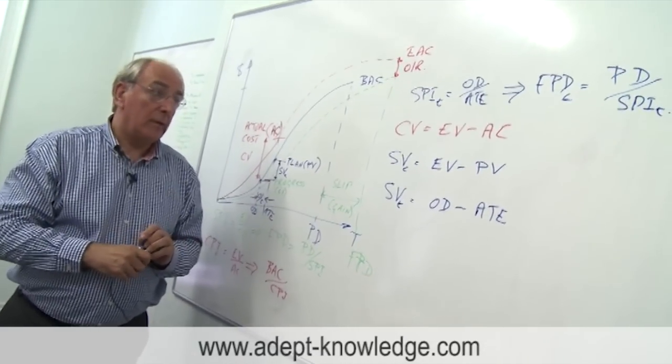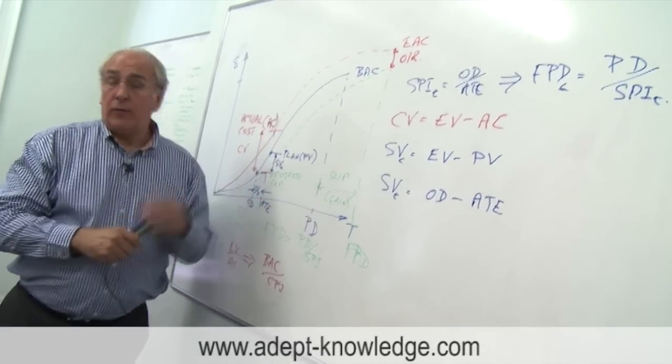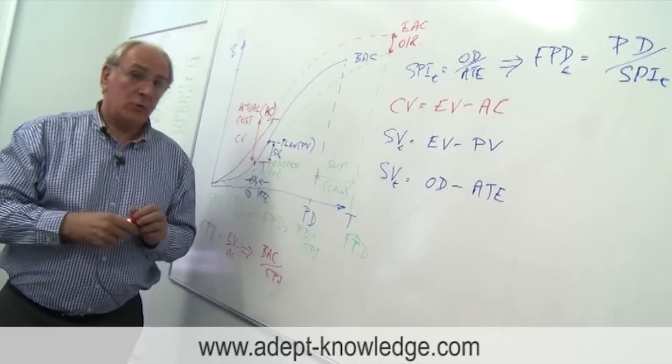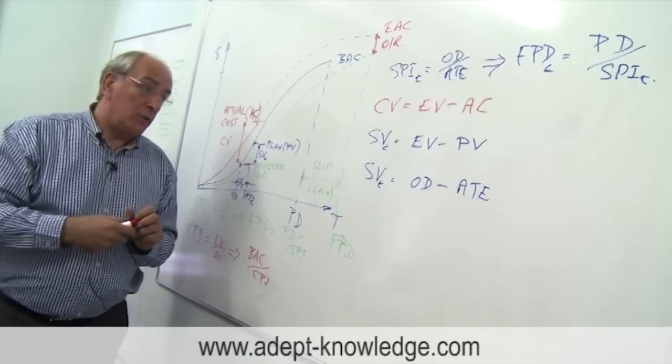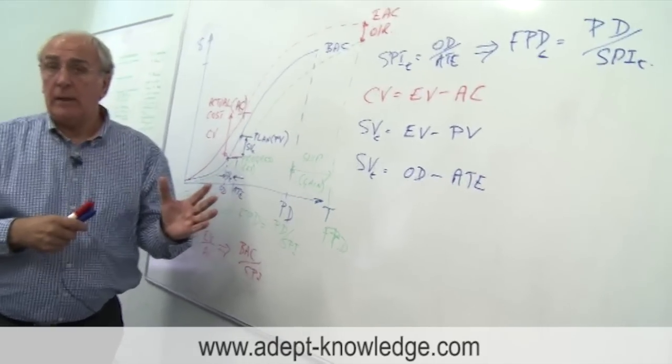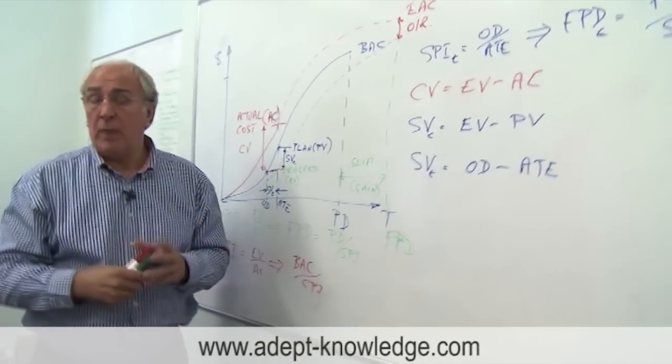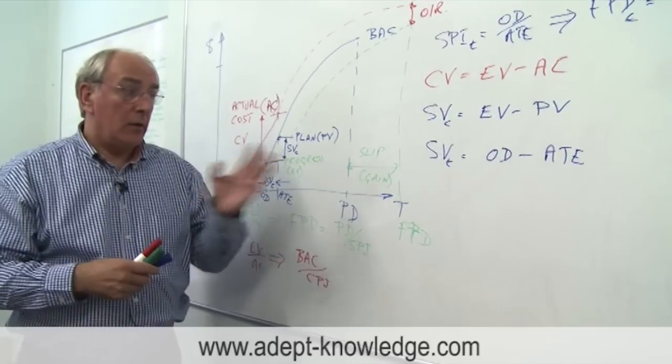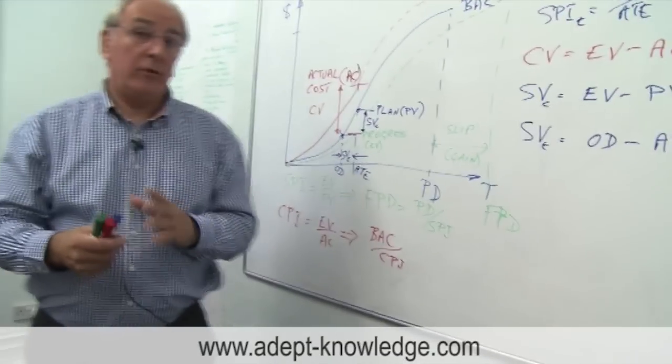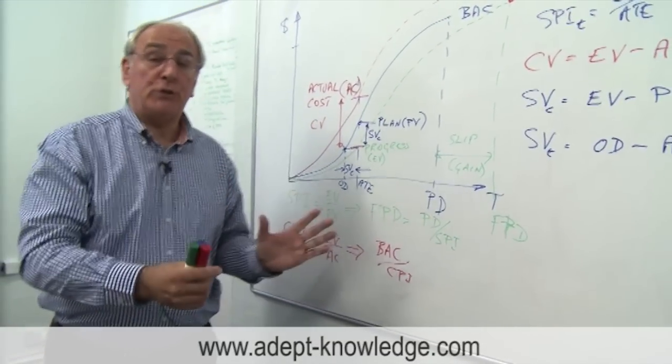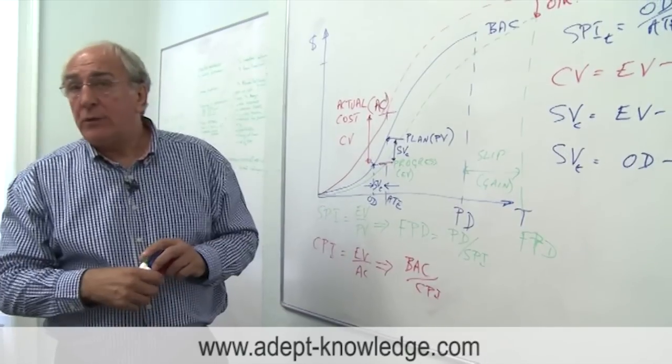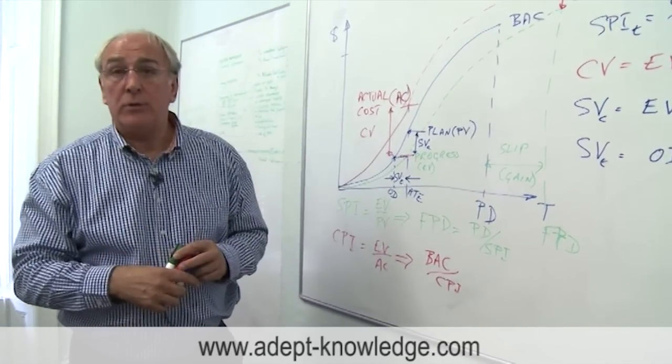The third pieces of intelligence that come out of this are the variances. If you recall, the cost variance was the difference between the earned value and the actual cost. The schedule variance was the difference between the progress that we made, the earned value, and the planned value. That was the earned value minus the planned value. And our schedule variance on time was our original duration, when we should have achieved this earned value, minus the actual time. That's going to tell us how late we're running on this project.